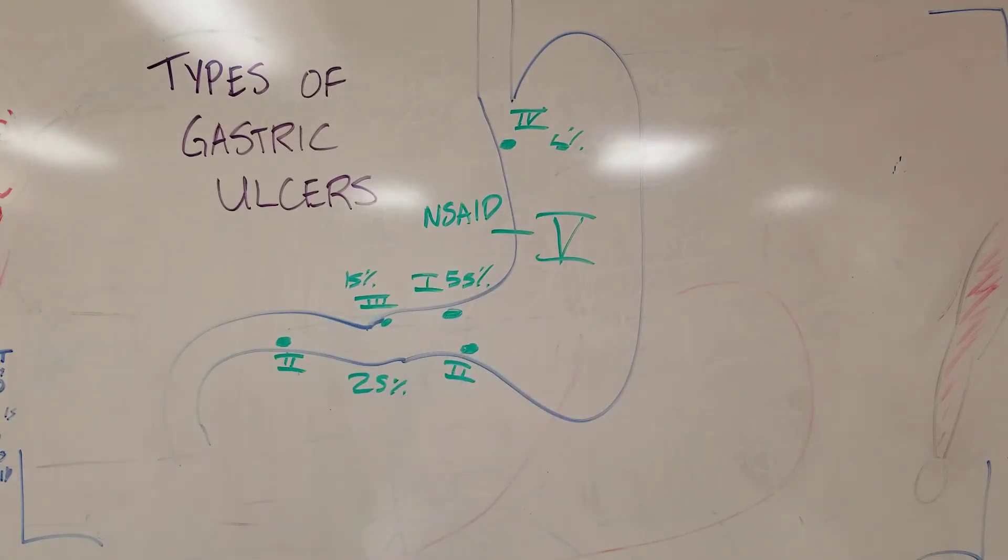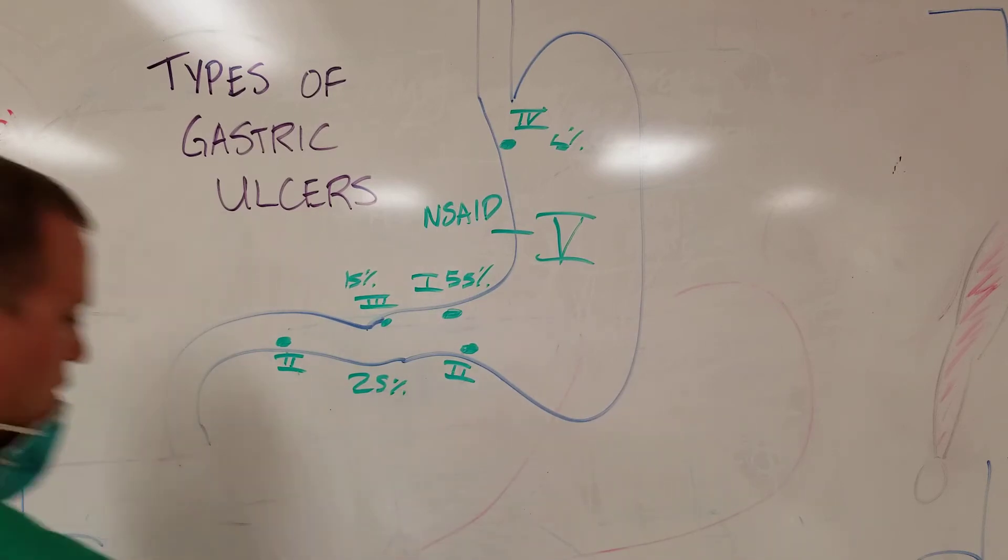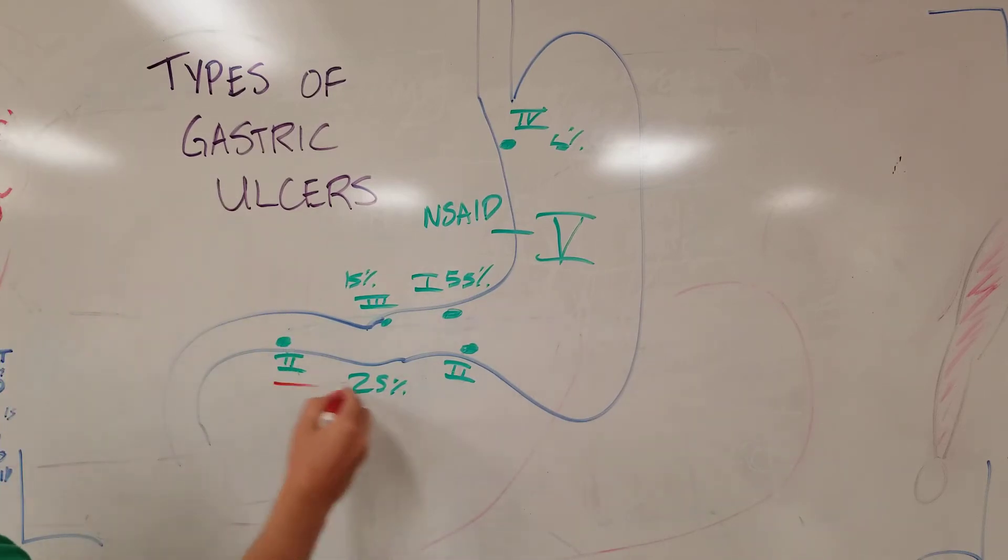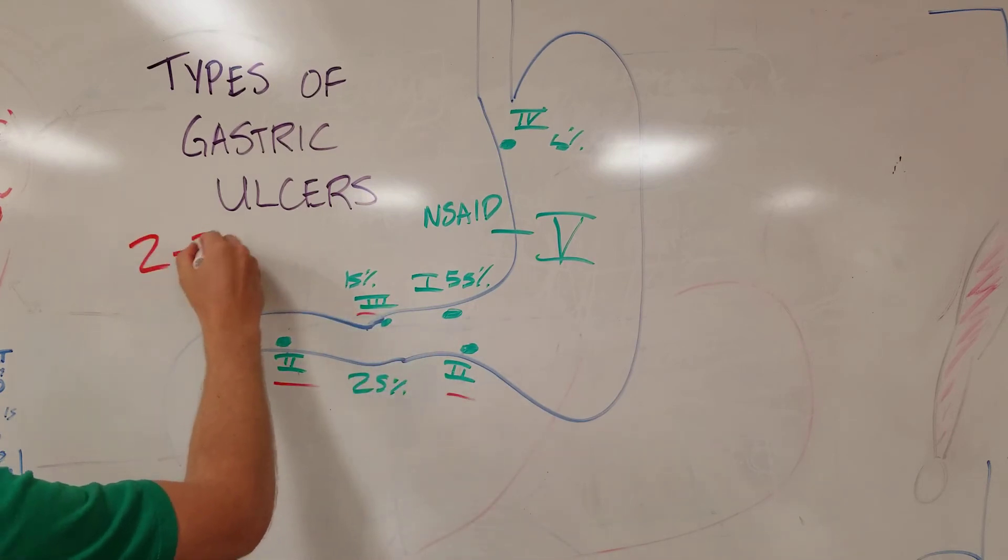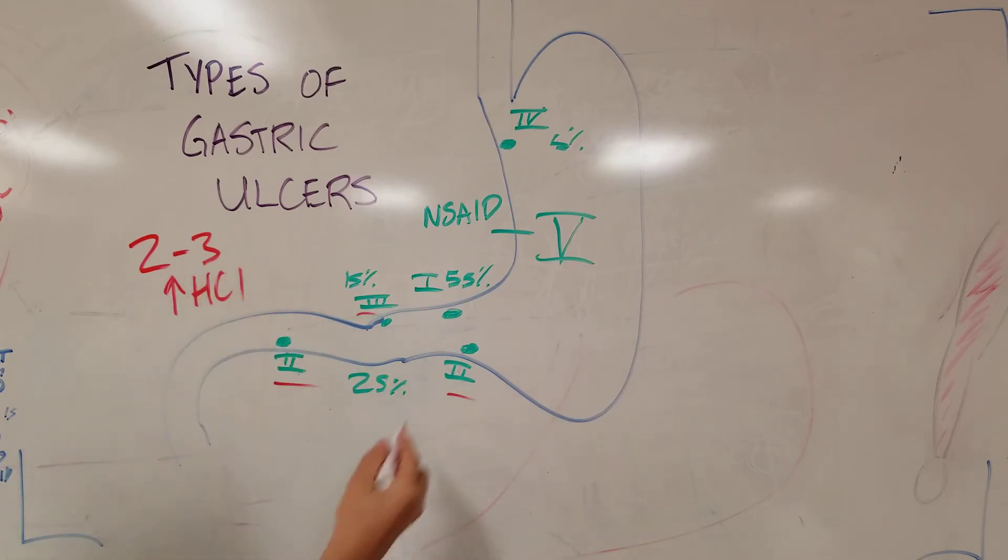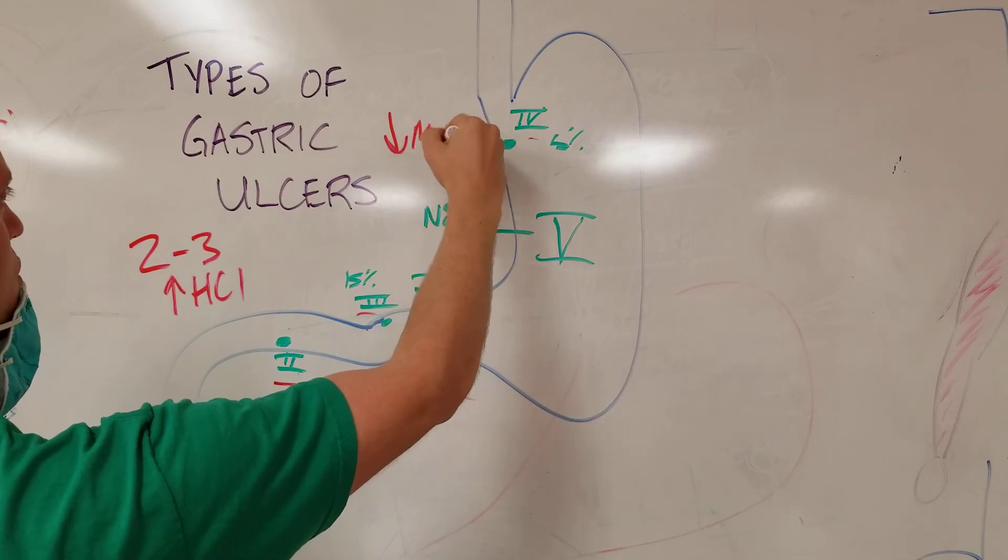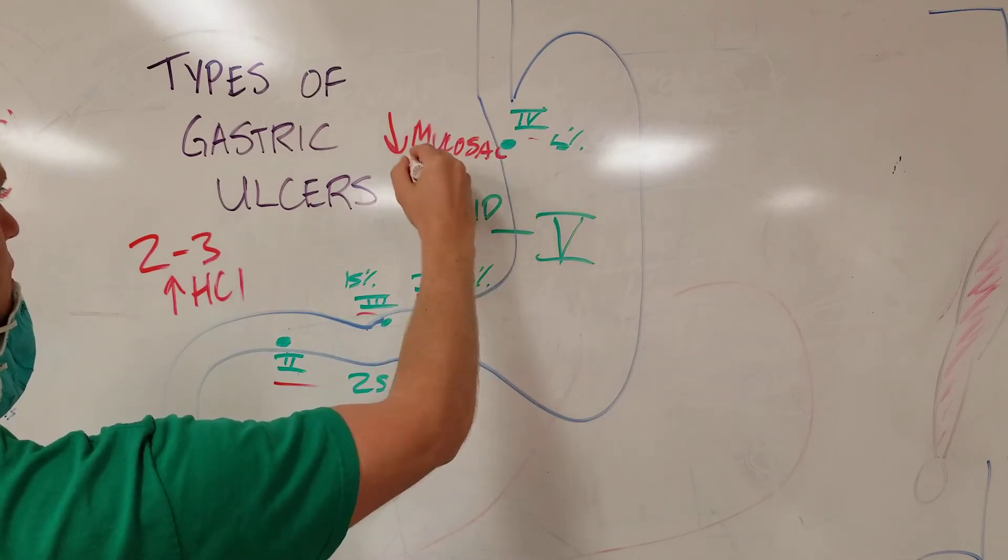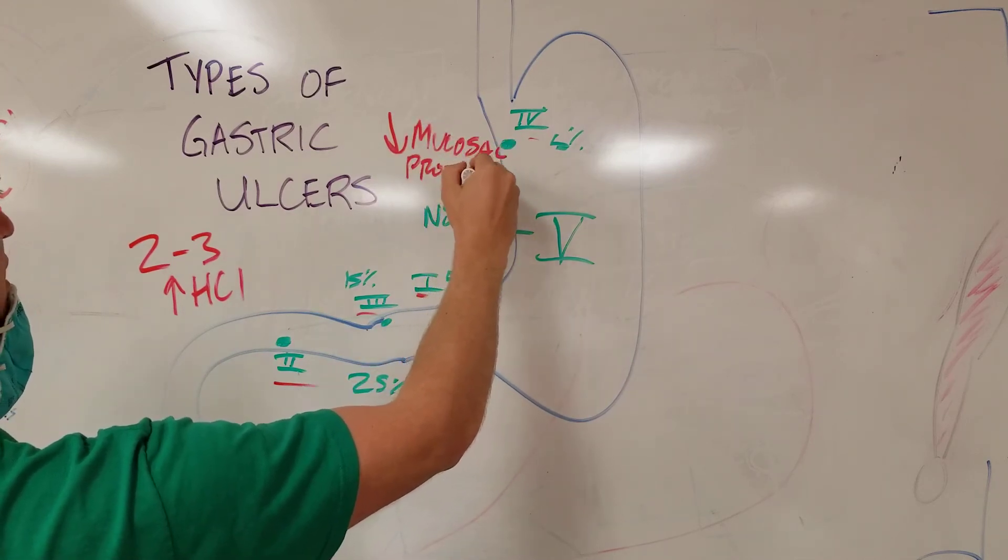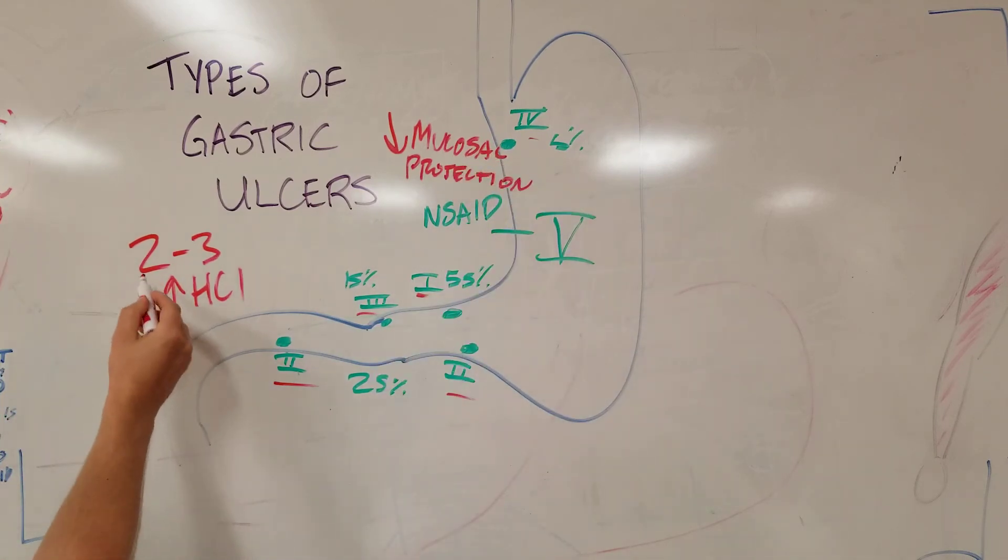So some important things to talk about are that numbers 2 and 3 are associated with increased acid production, whereas 1 and 4 are associated with decreased mucosal protection. The way I remember that is that Michael Jordan was number 23 and he had ups. So 2, 3 is increased production or increased acid.